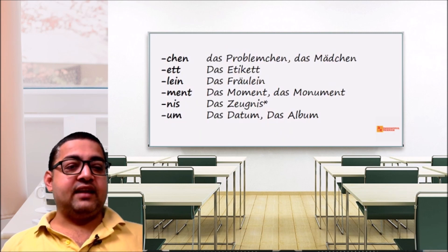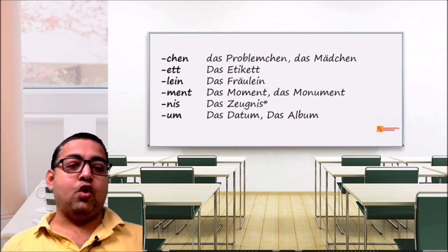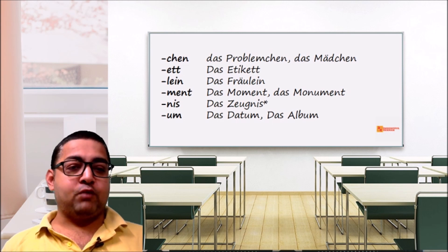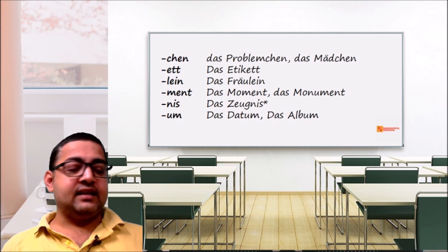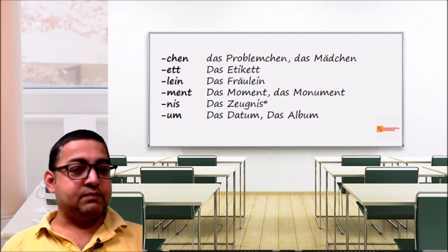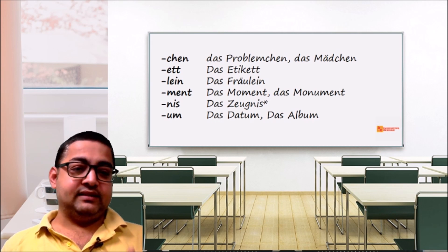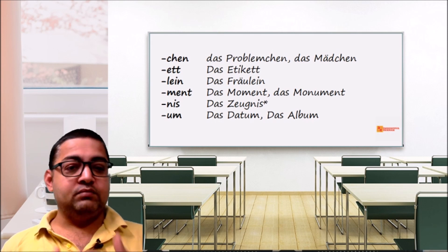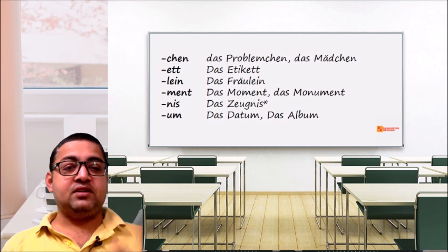What are the suffixes for das — the neuter category? Suffixes include: -chen, -lein, -ment, -nis, -um. Examples: das Problemchen, das Mädchen, das Etikett, das Fräulein, das Moment, das Monument, das Zeugnis, das Datum.